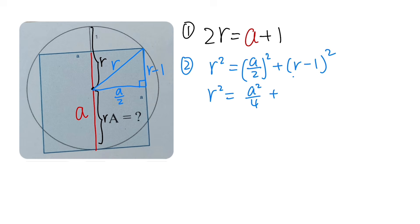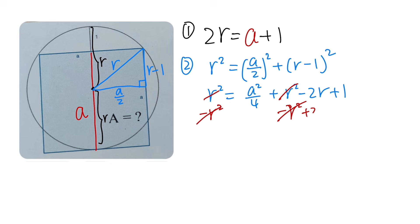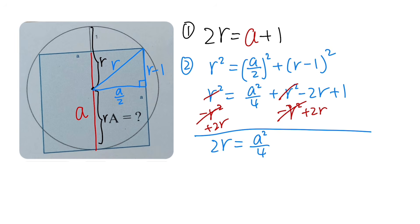Expanding (r − 1)² gives r² − 2r + 1. So r² = a²/4 + r² − 2r + 1. Subtracting r² from both sides they cancel, and adding 2r to both sides, the left-hand side becomes 2r, which equals a²/4 + 1.